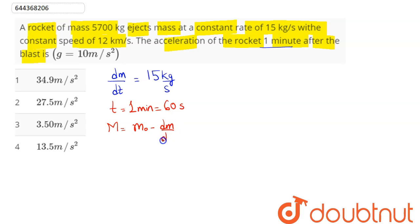m0 that is 5700 kg minus dm by dt into time t. So m0 is 5700 kg minus dm by dt value 15 kg per second and time is 60 seconds.